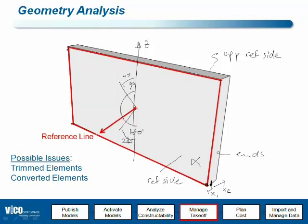In that case, there is a safety net: no surface gets lost. If a surface is not a reference side surface and it is not an opposite side surface, it must mean that it's an ends surface. So what you typically see when wall geometry in VicoOffice does not have a reference line is that the number for ends surface area is too high, because all vertical surfaces end up in that bucket. Again, that can be the case with trimmed elements or converted elements.